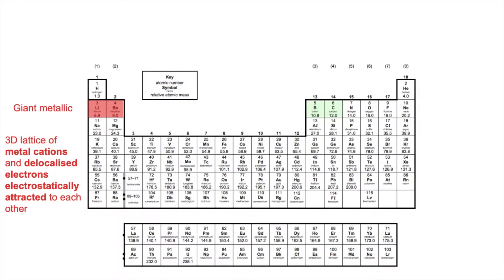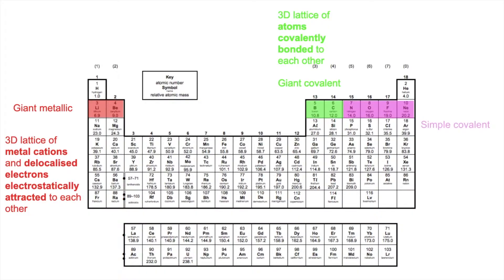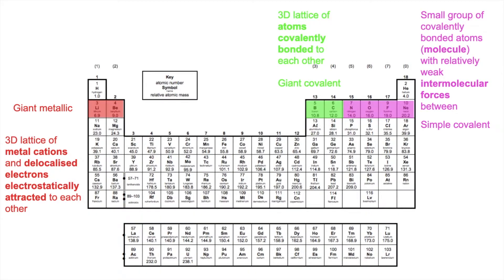The next two elements both have giant covalent structures — a 3D lattice of atoms covalently bonded to each other. The remaining four elements all have simple covalent structures: a small group of covalently bonded atoms which we call a molecule, with relatively weak intermolecular forces between them.